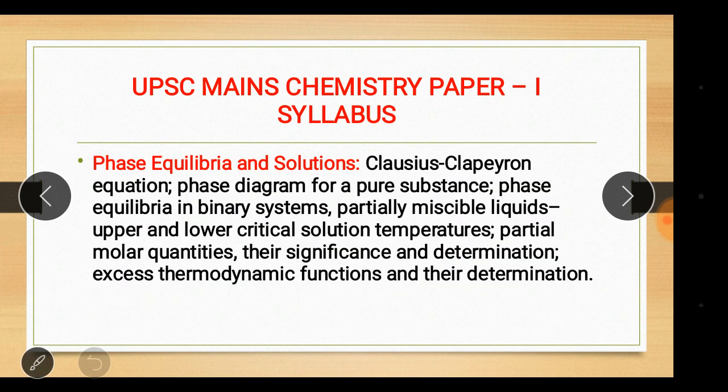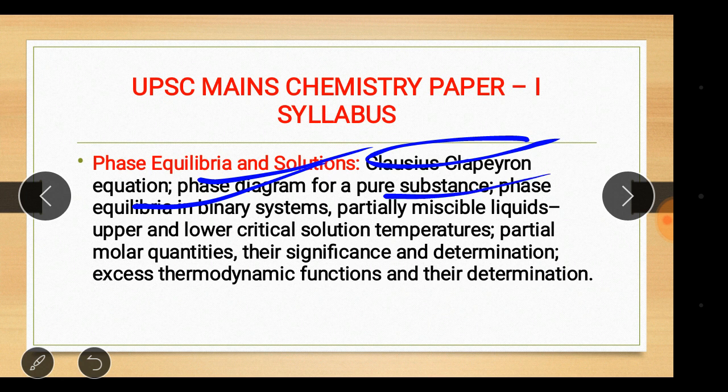Phase equilibria and solutions: Clausius-Clapeyron equation, phase diagram for a pure substance, phase equilibria in binary systems, partially miscible liquids, upper and lower critical solution temperatures.